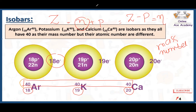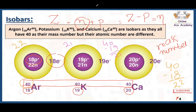In argon the mass number is 40, so 40 minus 18 equals 22 neutrons. In potassium, 40 minus 19 equals 21 neutrons. The number of neutrons in calcium is equal to 20. No matter how many protons and neutrons are present inside the nucleus, we are just concerned about the mass number — if the mass number is the same, these are isobars.